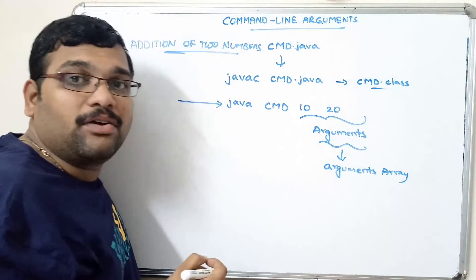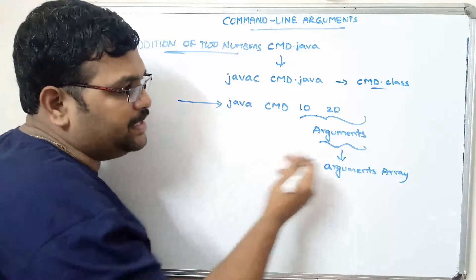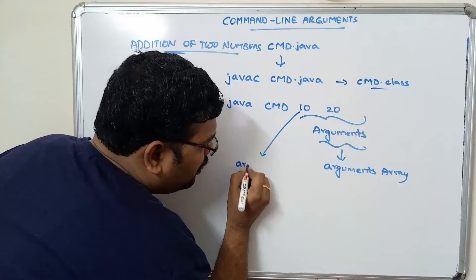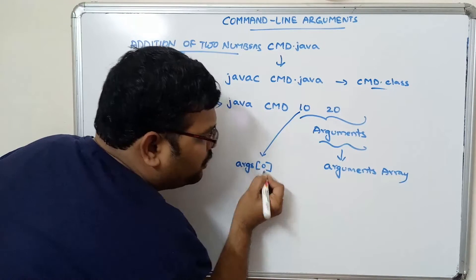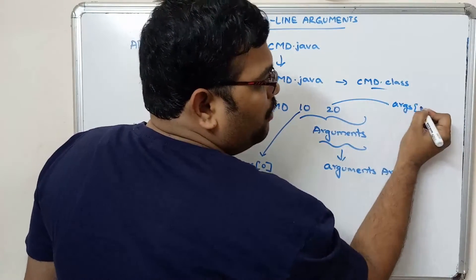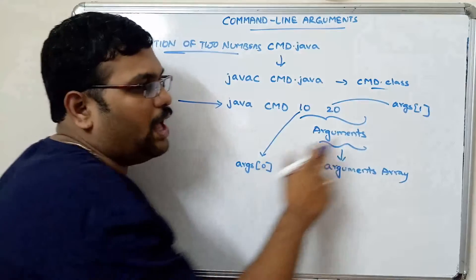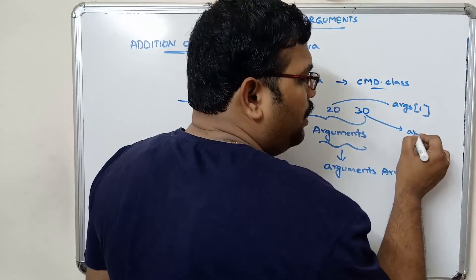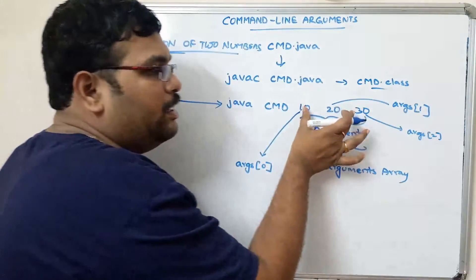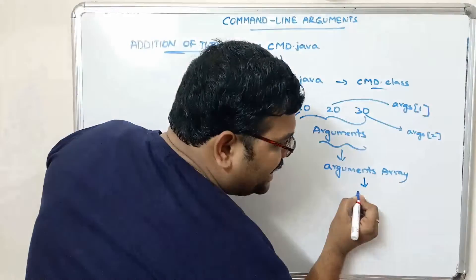An array consists of a group of elements of the same data type, and the index always starts from zero. Whatever input we give after the class name will be stored at index zero of the arguments array. The second argument is stored at index one, the third at index two, and so on. Every input will be stored in the arguments array, and this arguments array is of string data type.